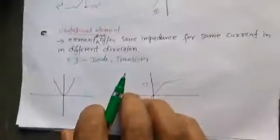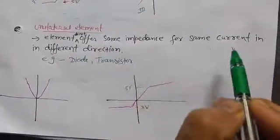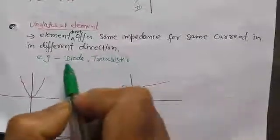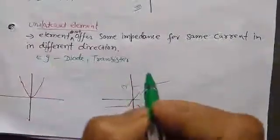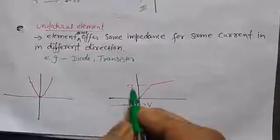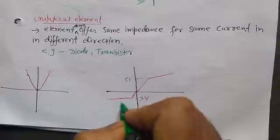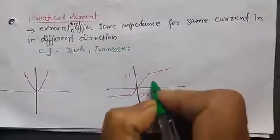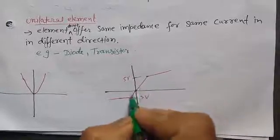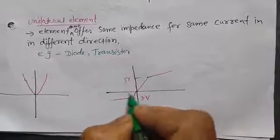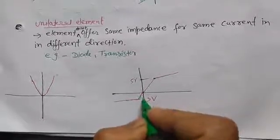Now let's move to the unilateral element. Unilateral elements do not offer the same impedance for the same current in different directions. Examples are diode and transistor. They offer different impedance in different directions. The plot in the first quadrant and in the third quadrant are not mirror images of each other. As you can see in this graph, the maximum voltage in Q1 is 5 volts, but in Q3 the maximum voltage is only 3 volts. These two are not mirror images, so this component belongs to unilateral elements.